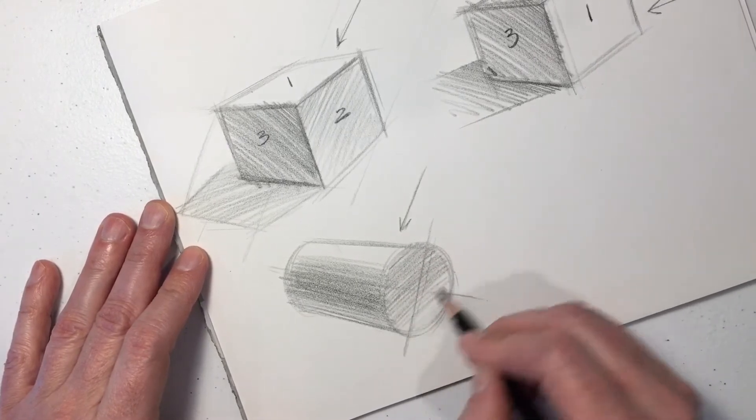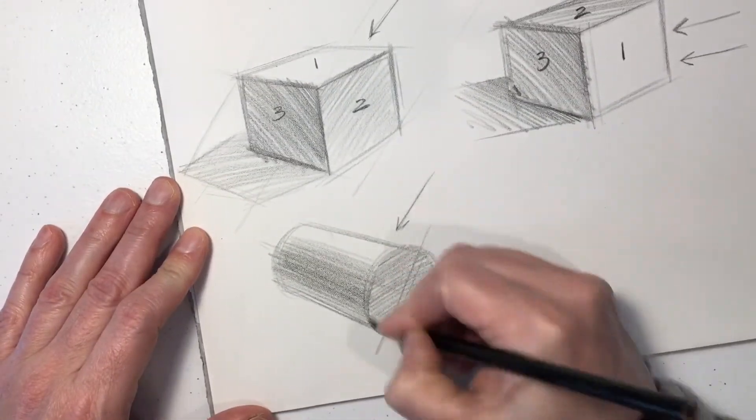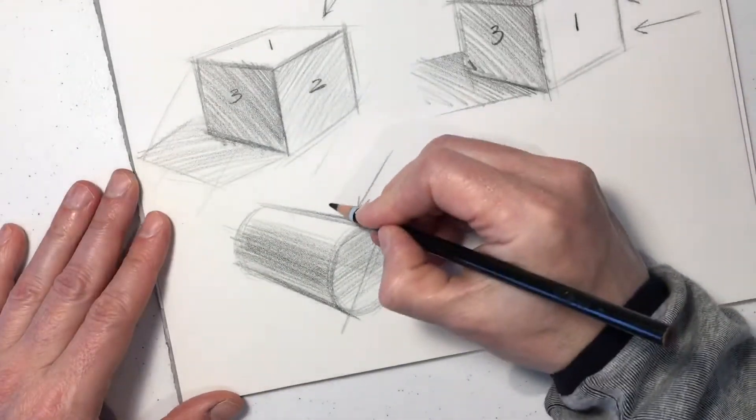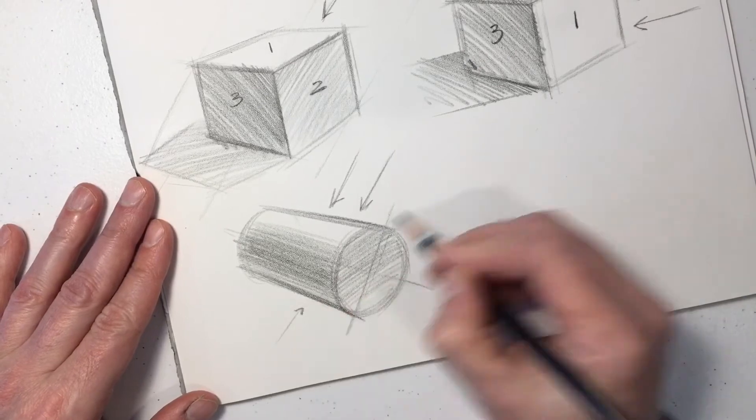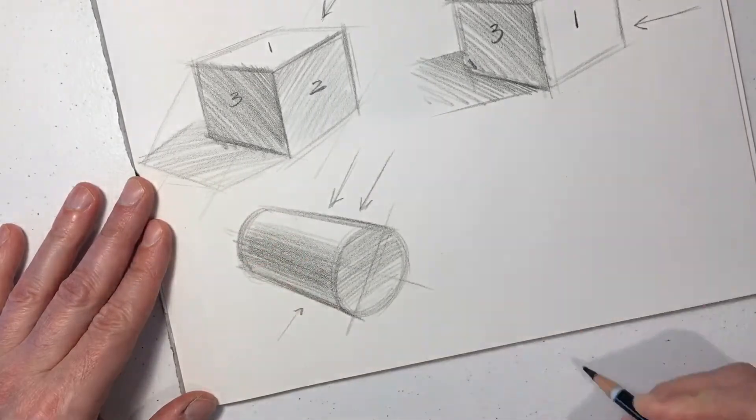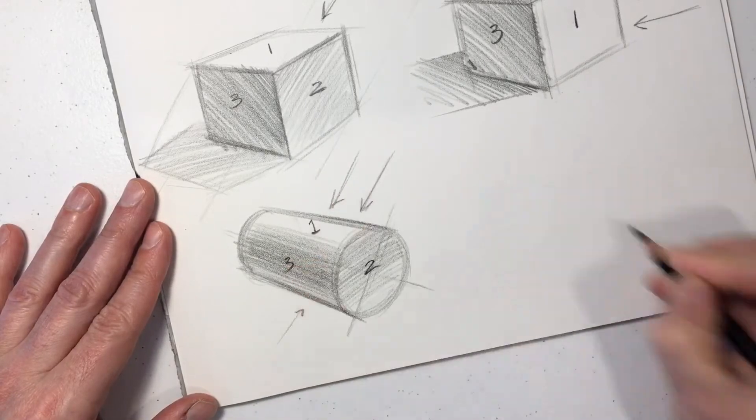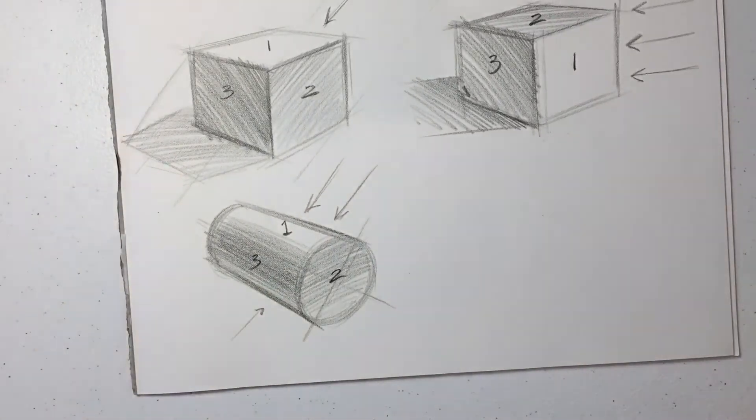So if we were to number this, the top of the cylinder is going to be our number one side. The end of the cylinder will be number two. And the bottom of the cylinder will be number three.